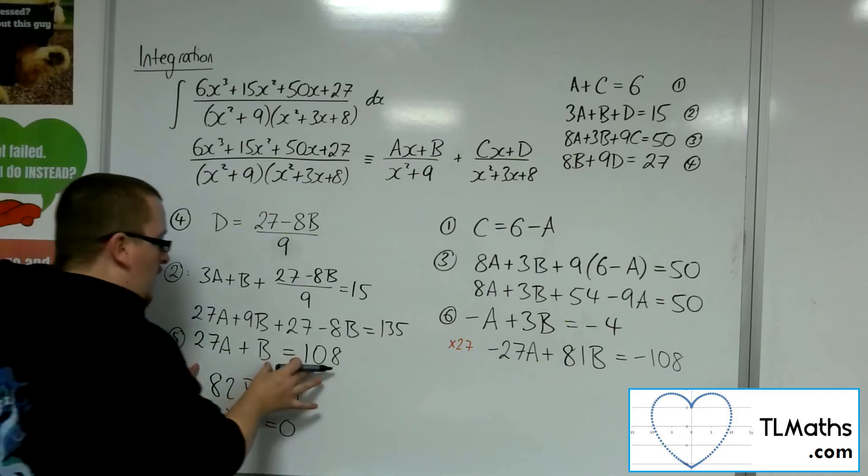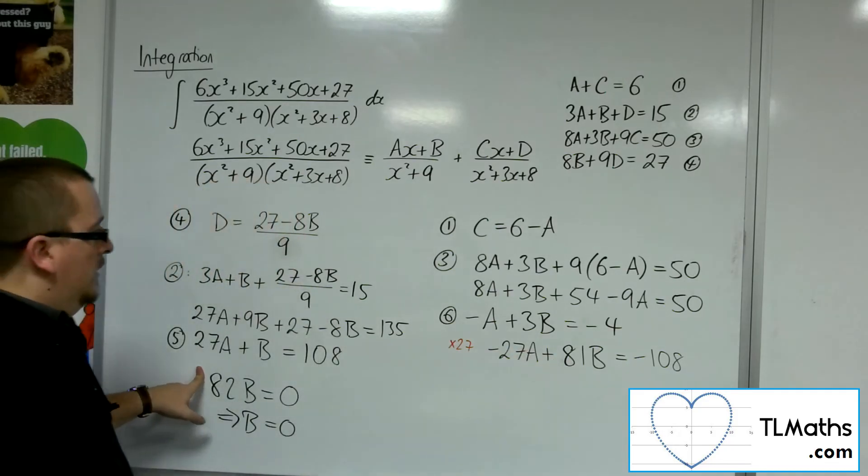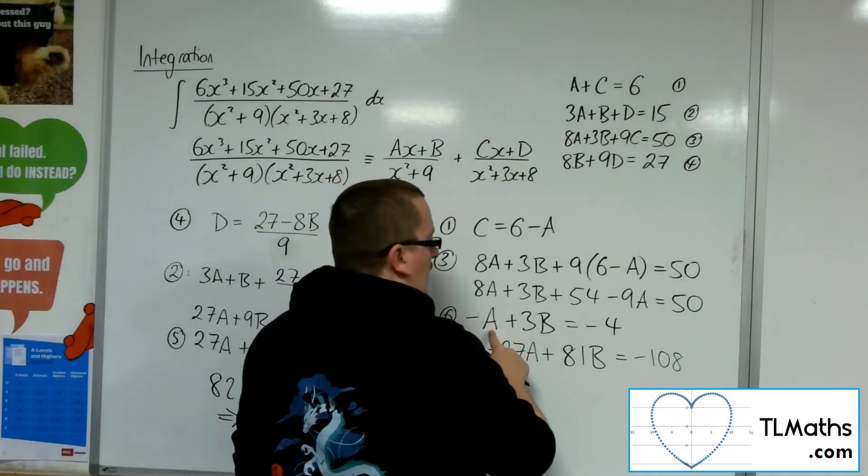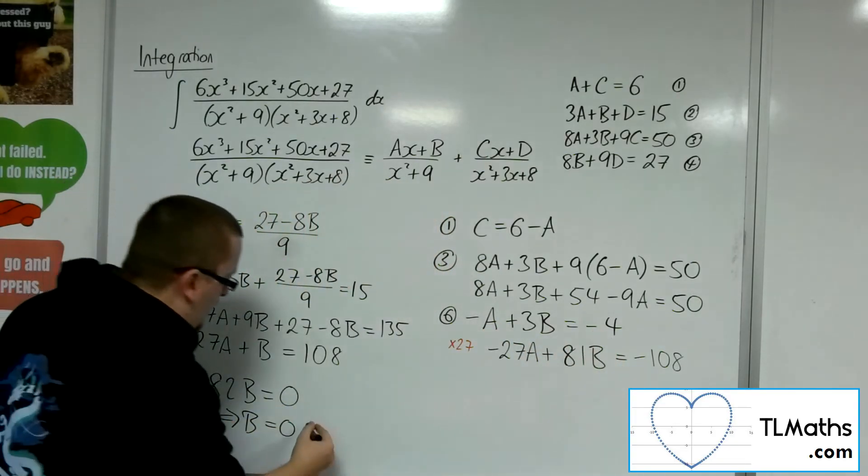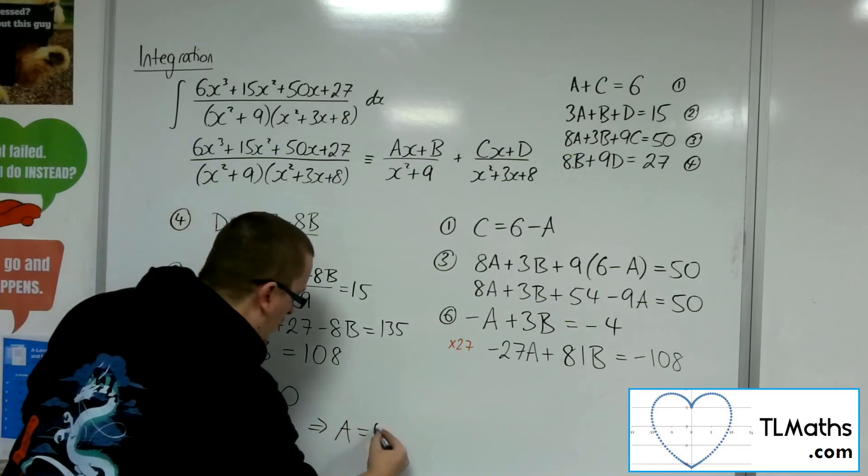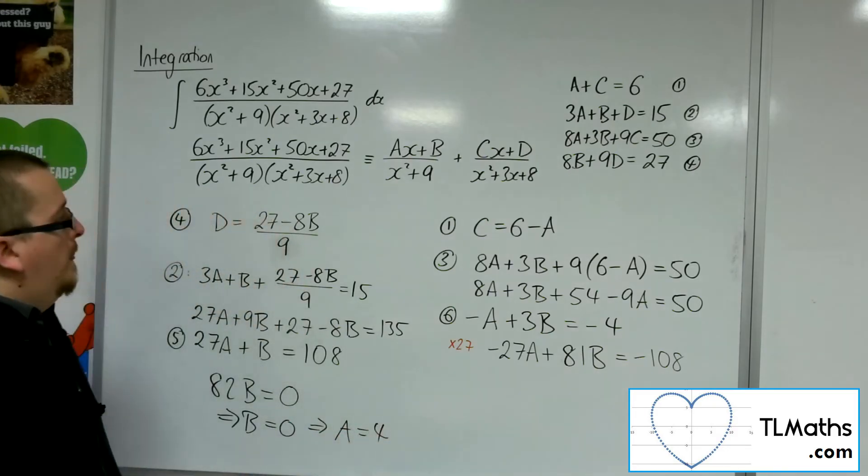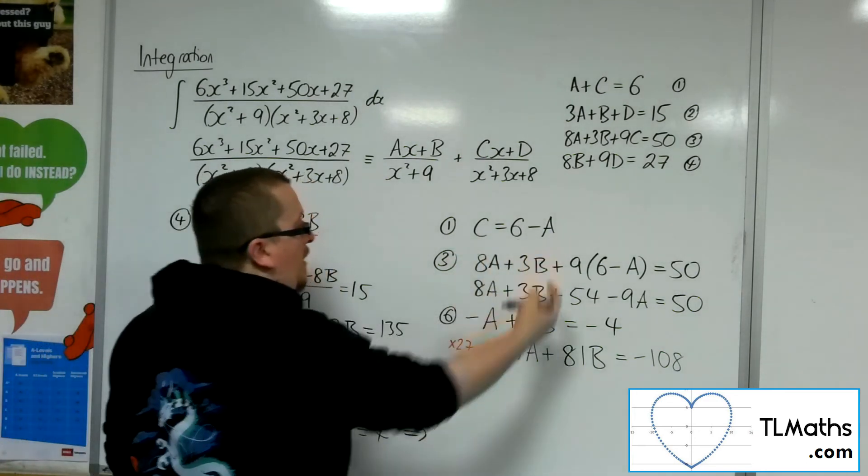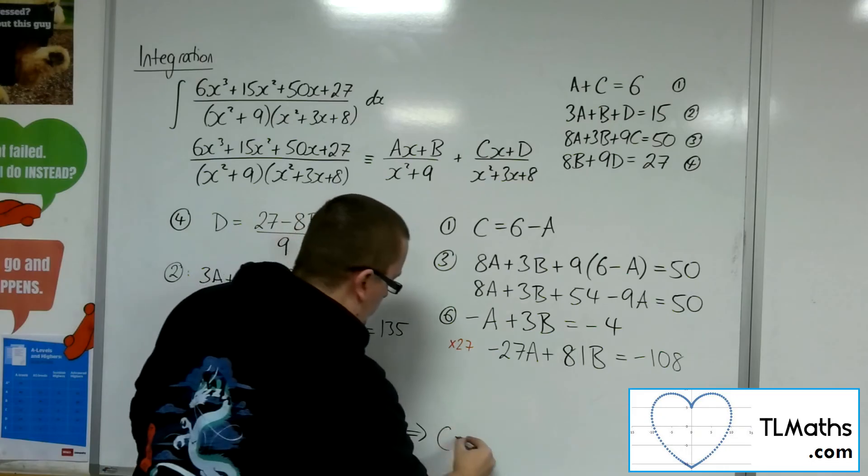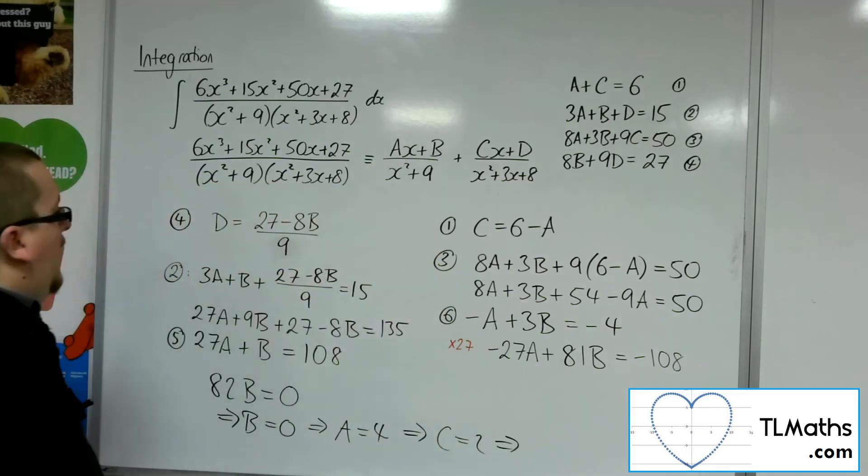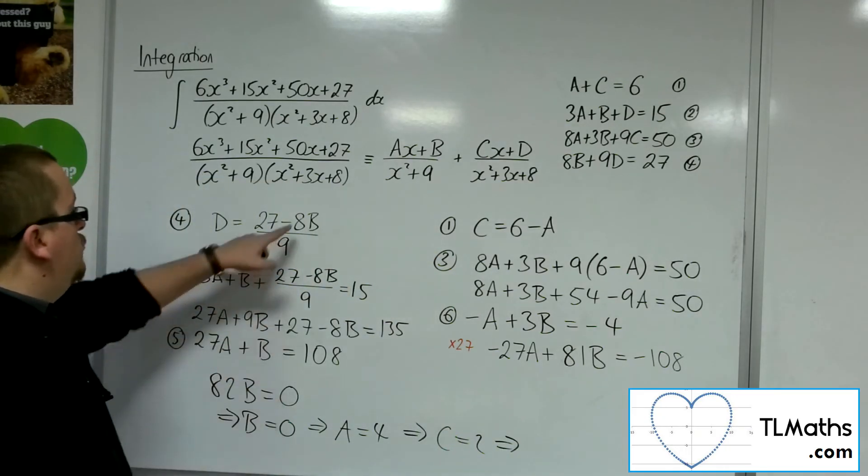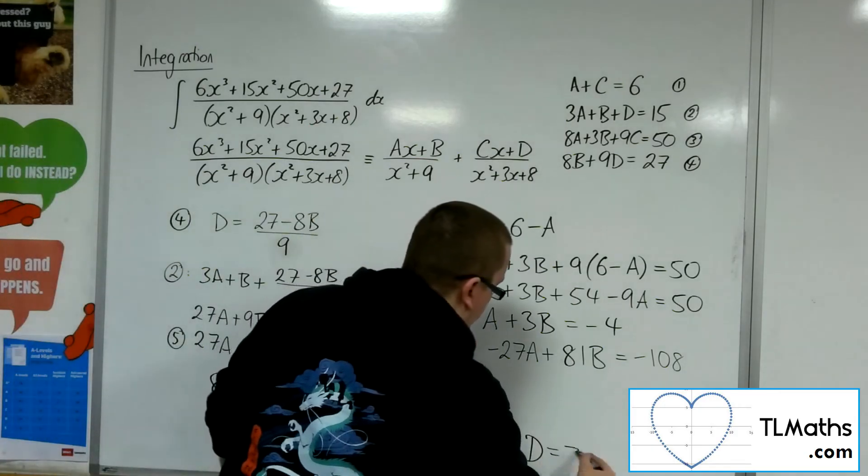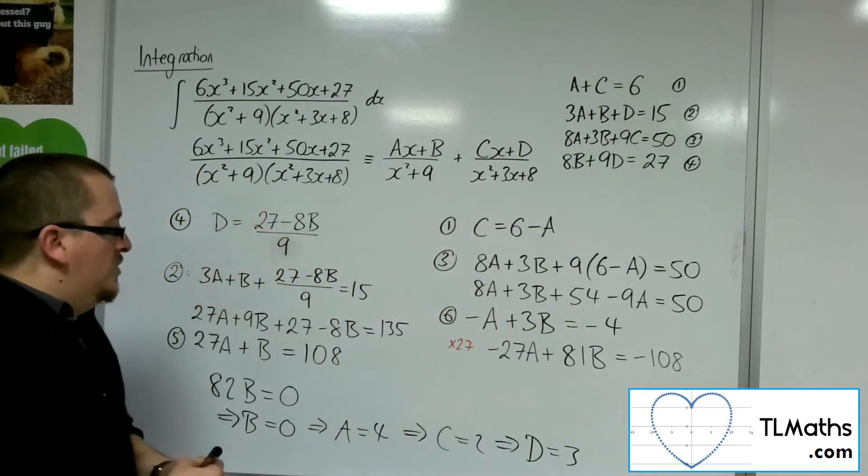So if b is 0, I can substitute that into either of those two. So actually it's easiest if I substitute into that one. So minus a will have to be minus 4. So a would have to be 4. So we've got two of them. Now, with that, if a is 4, c is 6 minus 4. So c is 2. And if I've got b is 0, then d is 27 over 9, so d is 3. So that has got me all 4.